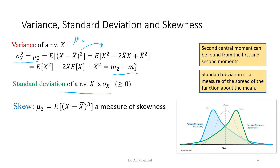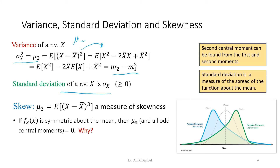The third quantity is the skewness. The skew is a measure of how skewed the PDF is — it could be right-skewed, left-skewed, or symmetric. Quantitatively, skewness is mu3, the third central moment: E[(x − x-bar)³]. It can be positive, negative, or zero. For a symmetric PDF, all odd moments are zero, which is why we use odd moments to measure skewness.